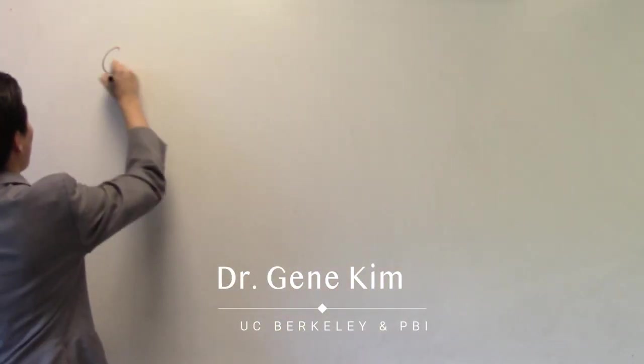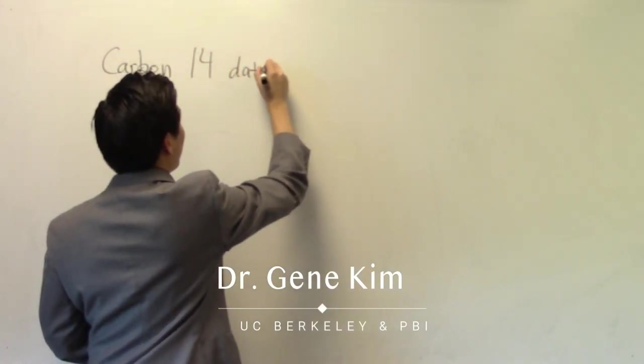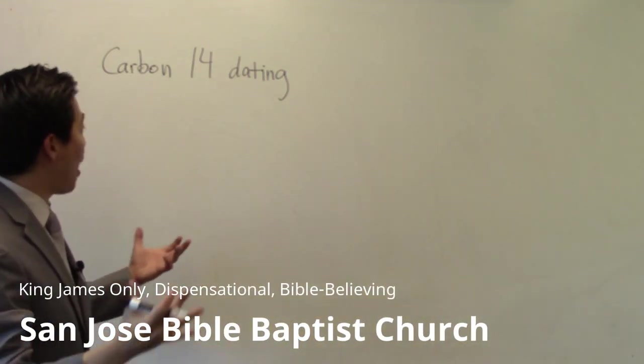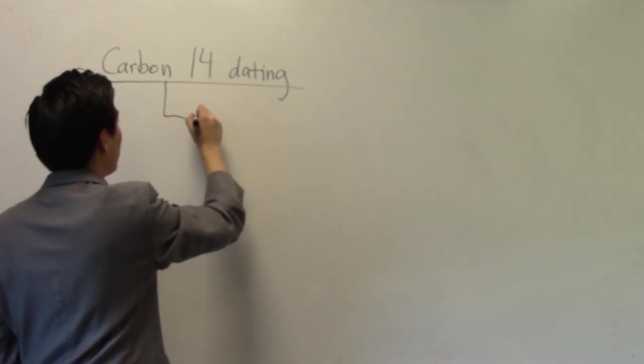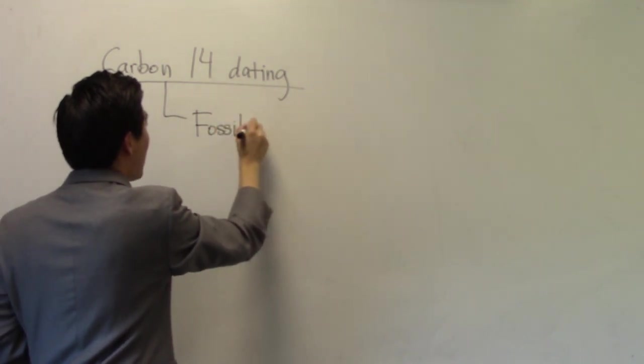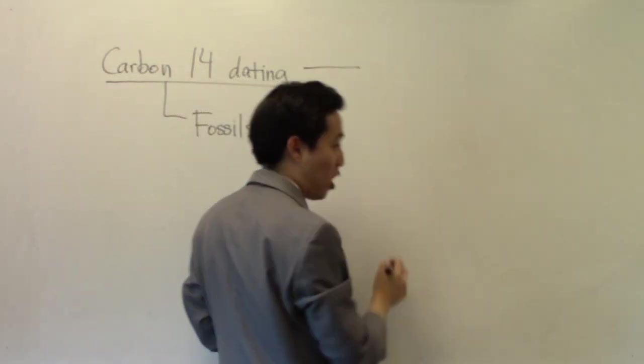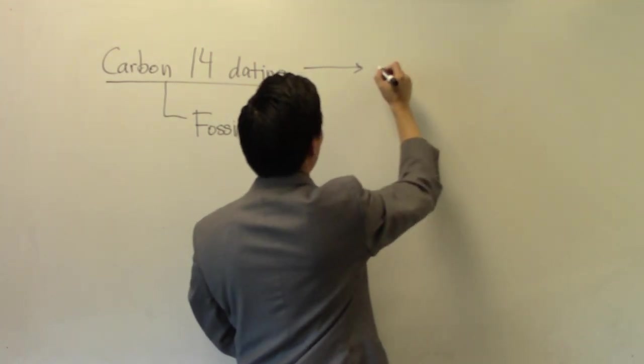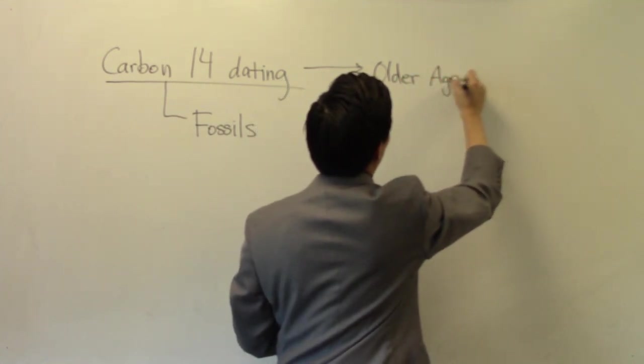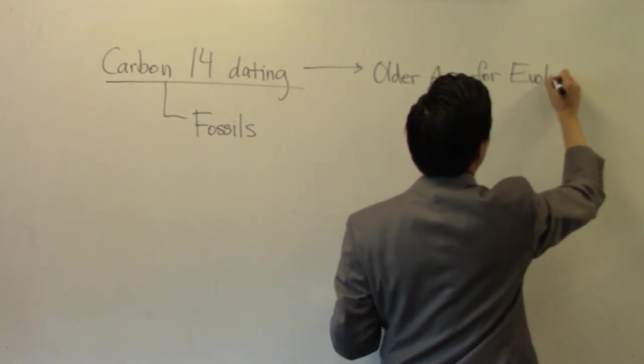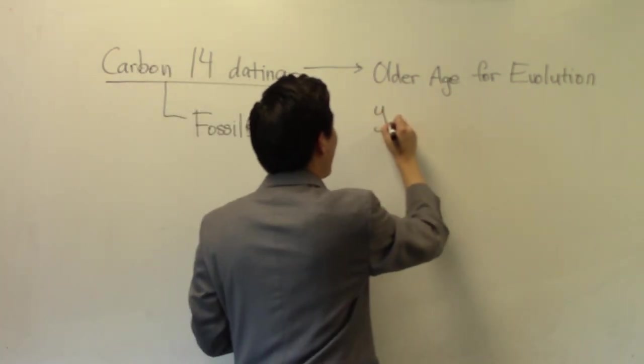Carbon-14 dating, for people who don't know, what they like to do is take a certain fossil. You gotta realize all manner of life will have this kind of carbon within them. So by measuring the amount of carbon-14 inside a fossil, we can guess how old the fossil is. And evolutionists would like to use this to prove the old age for evolution.